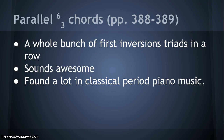Parallel 6-3 chords, which we saw in the Beethoven example from the last movement of the Opus 2, No. 3 Sonata, are just a bunch of first inversion triads in a row — and it sounds really cool. It's basically prolonging the tonic, and they happen a lot in classical period music. You just want to note them when they're there and not get confused when you're seeing a bunch of first inversion triads in a row. So now you're ready to go on to the second video where we'll part-write some of them.